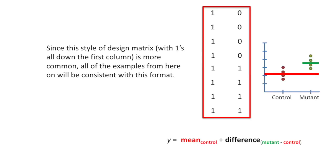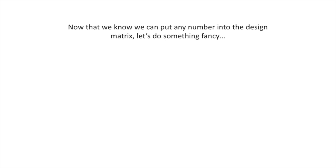One note before we move on: this style of design matrix with ones all the way down the first column is more common, so all examples from here on will be consistent with this format. Now that we know we can put any number into the design matrix, let's do something fancy — let's combine a t-test and a regression. Holy smokes, that's totally crazy!